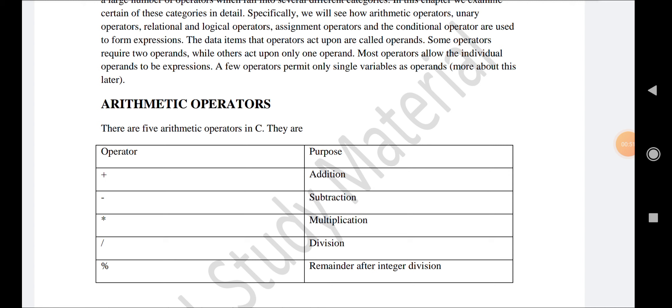The data items that operators act upon are called operands. Some operators require two or more operands which they act upon, while others act upon only one operand.